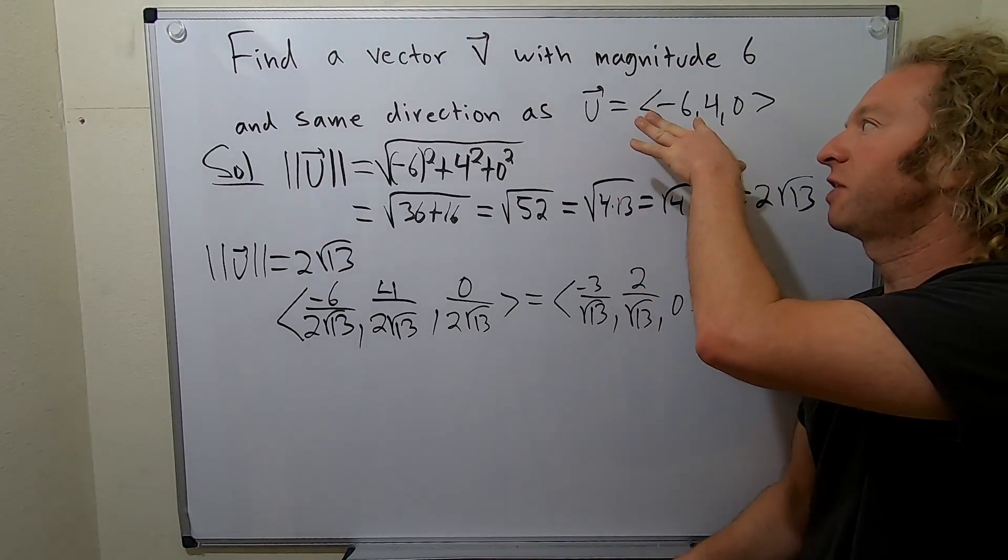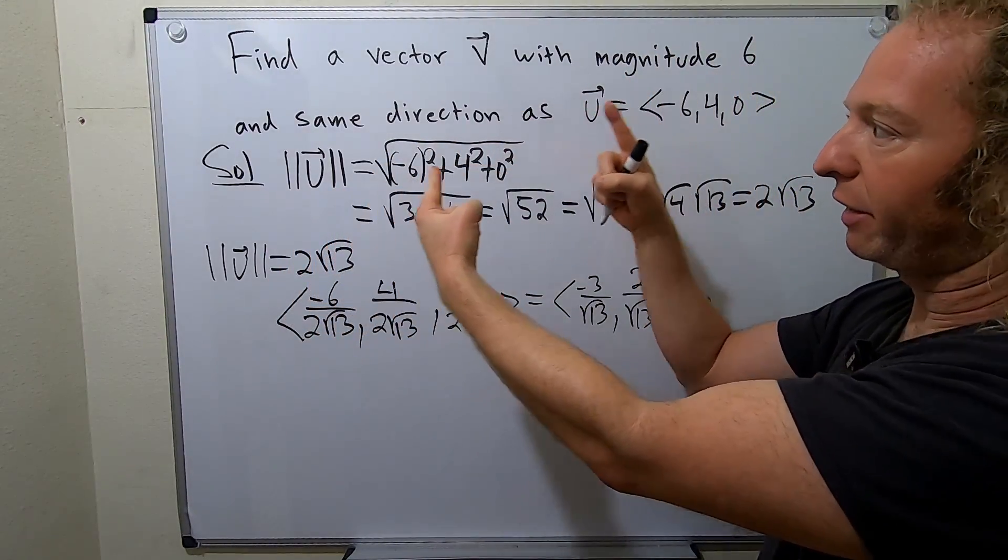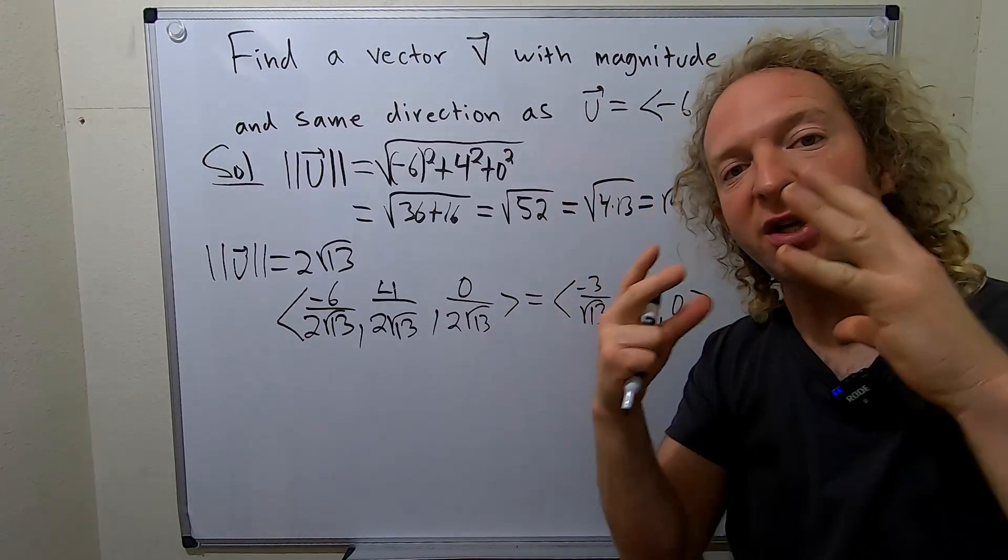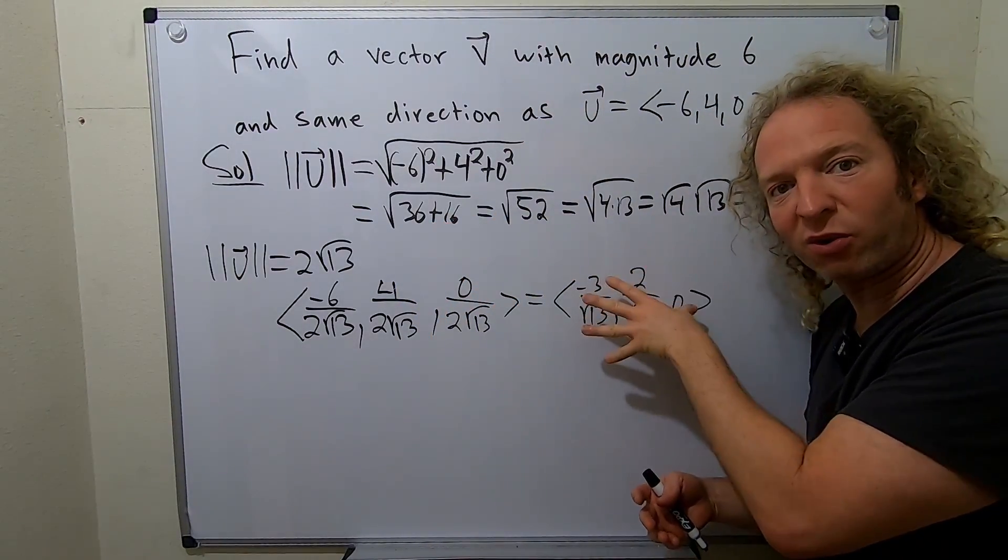So what we've done is we've taken this vector and we've normalized it. So, like, if the vector was this big, we made it have length 1. If the vector was this big, we made it have length 1. So we've taken the vector and we've forced it to be a vector of length 1. That's called a unit vector.